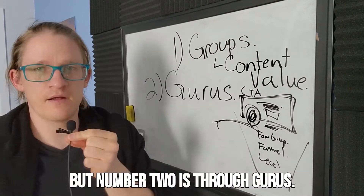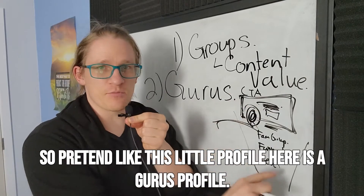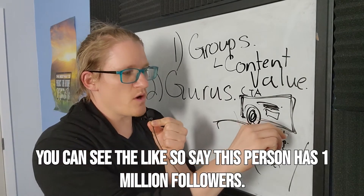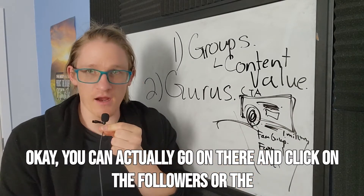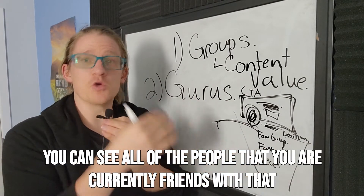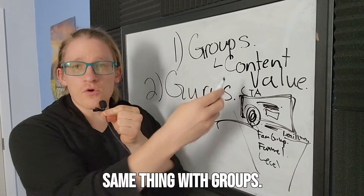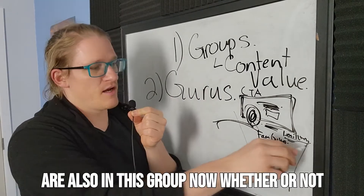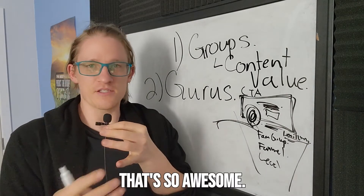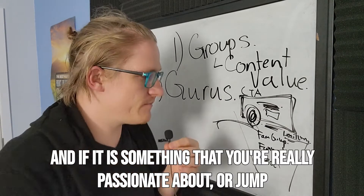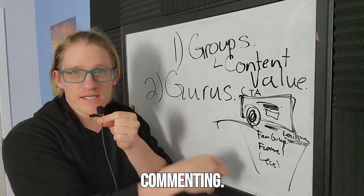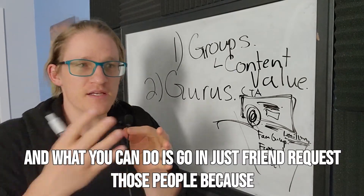Number two is through gurus. Pretend this profile is a guru's profile — you can see their number of likes and followers. Say this person has 1 million followers. You can go on there, click on the followers or likes, and specifically on Facebook you can see all of the people you are currently friends with who also follow this person. Same thing with groups — you can go into a group and see all your friends that are also in that group. You can then friend request those people who are active and commenting, because they are like-minded.